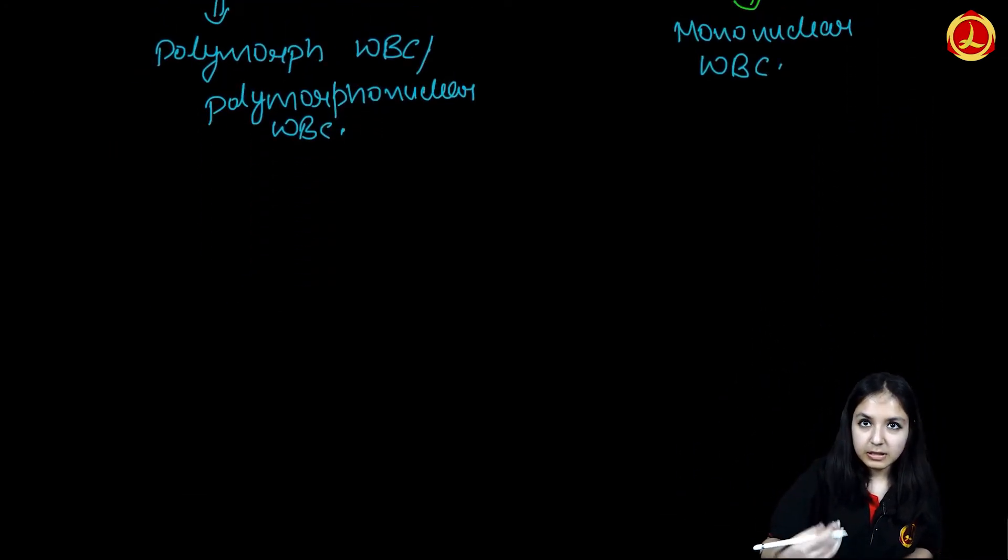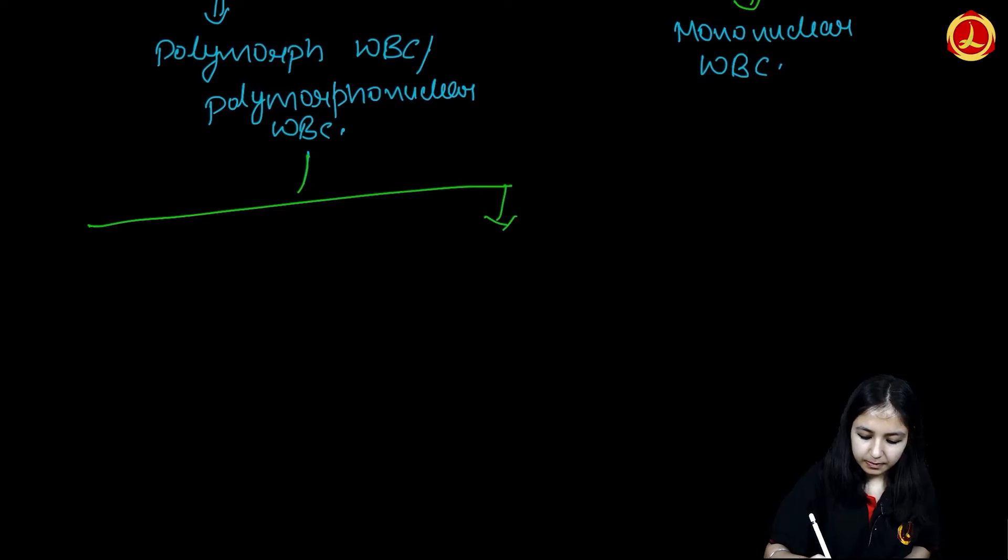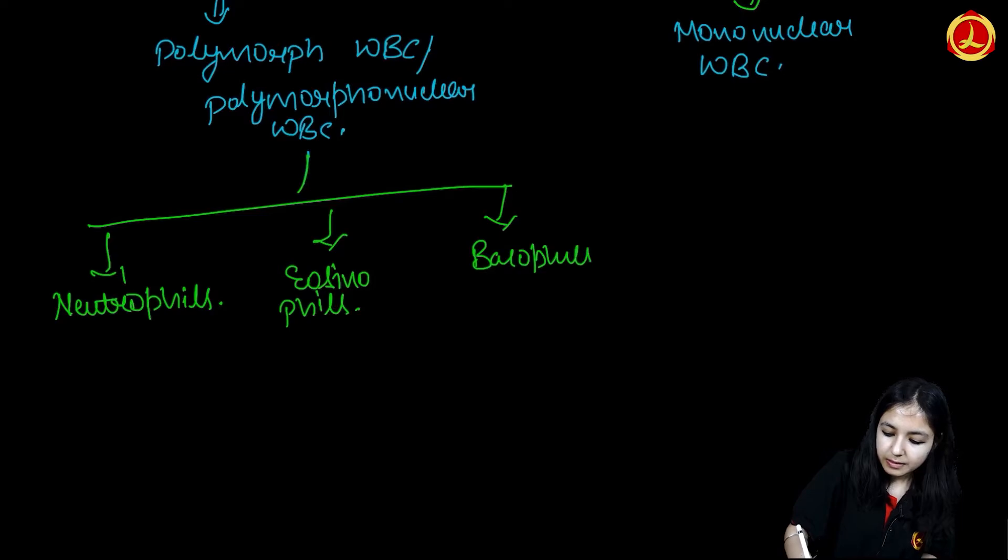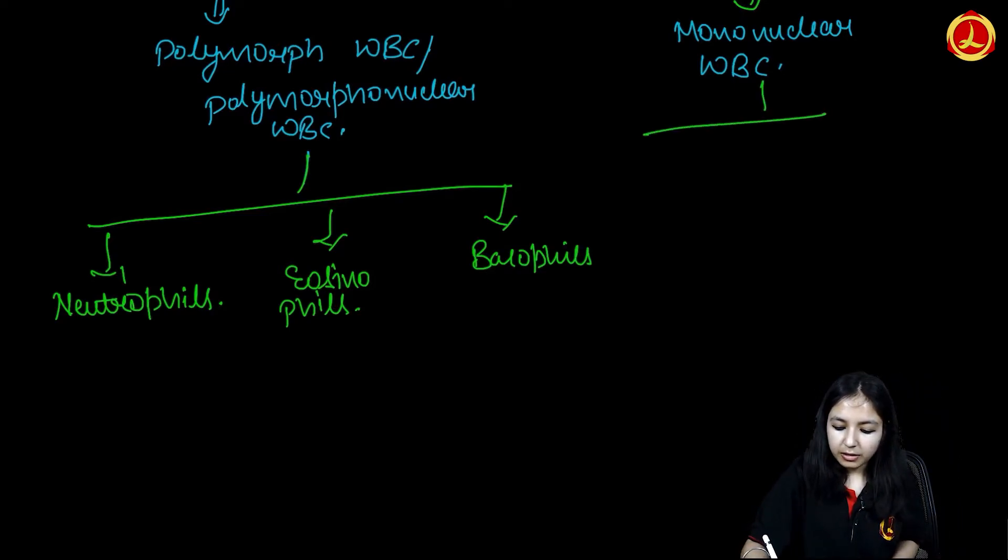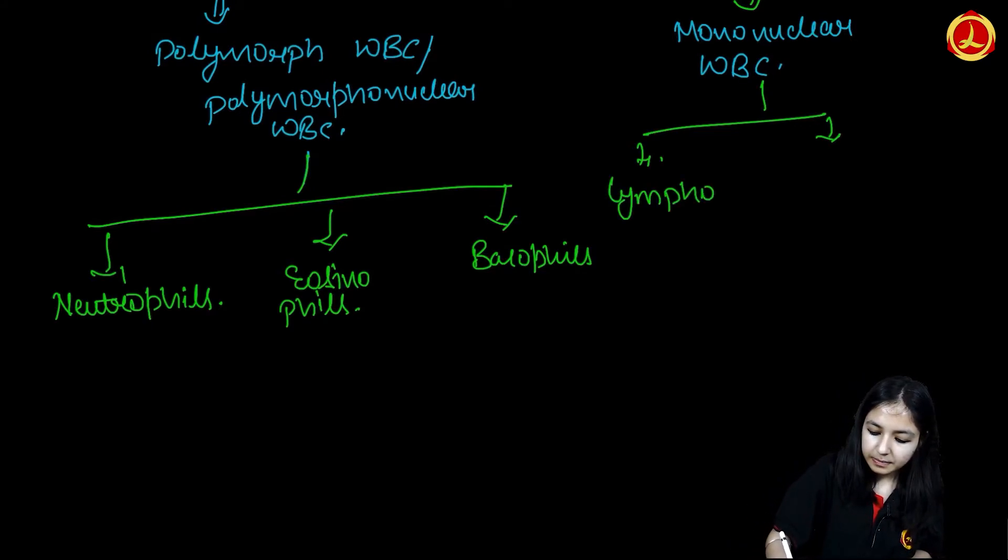Coming to the granulocytes and Agranulocytes, there are many types. First, we will talk about granulocytes. These are neutrophils, eosinophils and basophils. And talking about Agranulocytes, we have lymphocytes and monocytes.